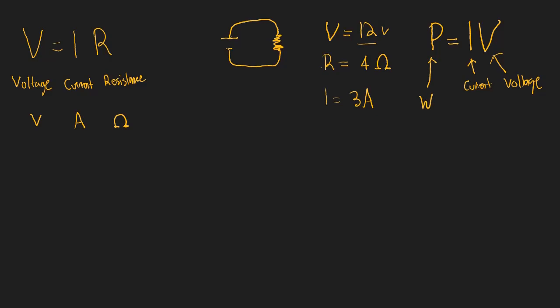So we might get a question asking what is the power of this circuit. Power equals current times voltage, which is 3 times 12, giving us an answer of 36 watts. This is a very basic way to solve these types of Ohm's Law questions.